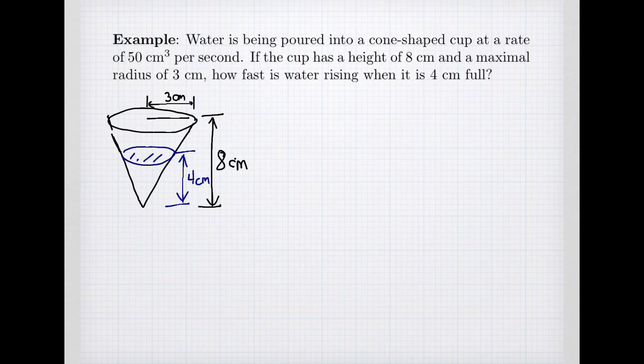Well, for a related rates problem, we are interested in identifying our variables. So let's identify our variables first. When considering the water, there are three basic measurements we can consider. We could have our total volume, we have the height of our water, and there's the radius at the top of the cup. So the radius of the water.